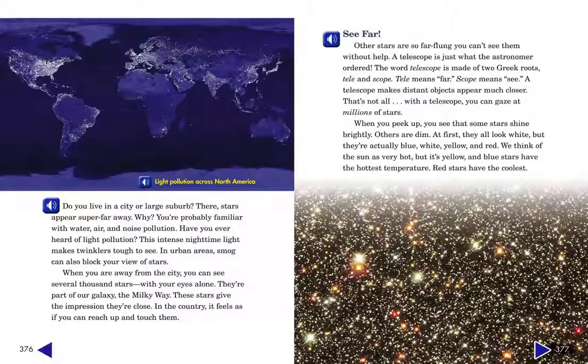When you peek up, you see that some stars shine brightly. Others are dim. At first, they all look white. But they're actually blue, white, yellow, and red. We think of the sun as very hot. But it's yellow. And blue stars have the hottest temperature. Red stars have the coolest.